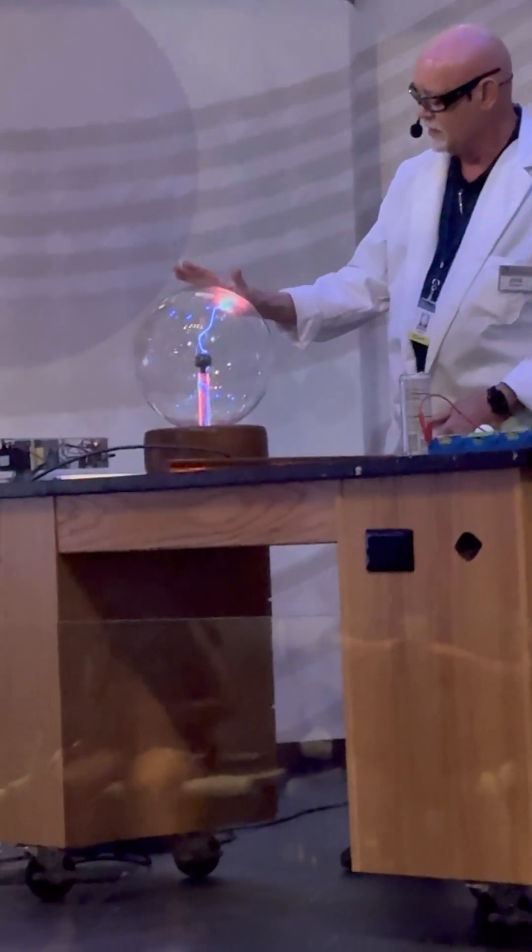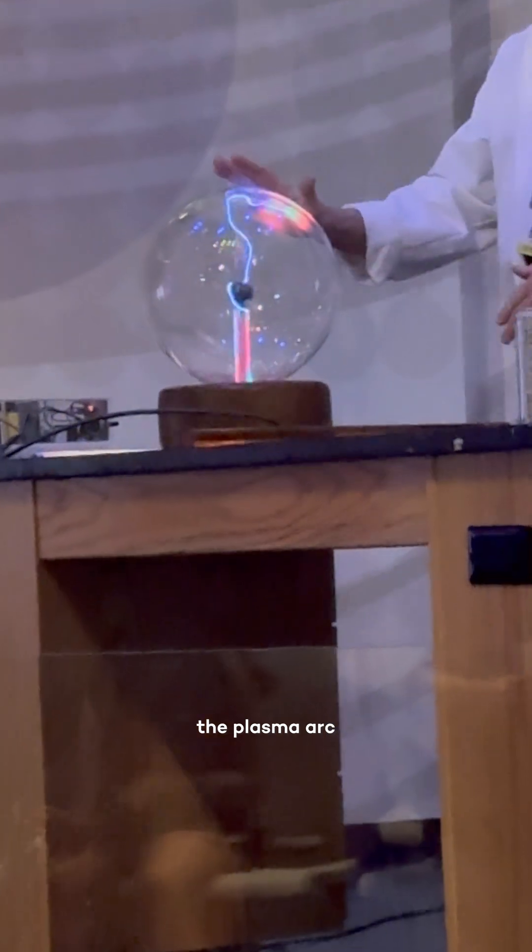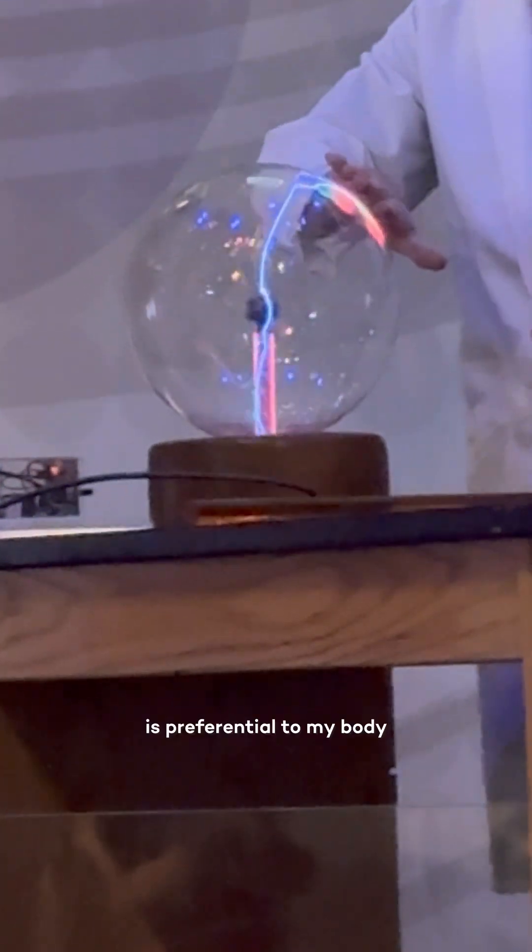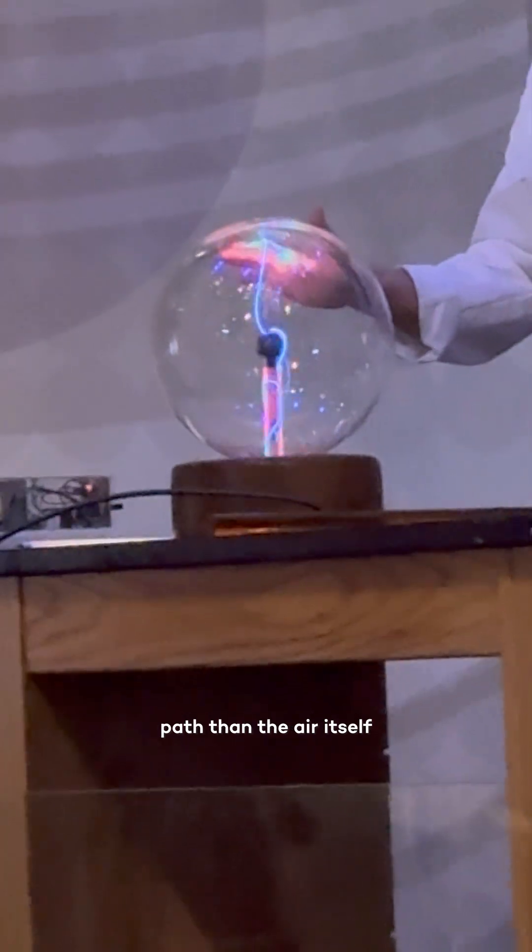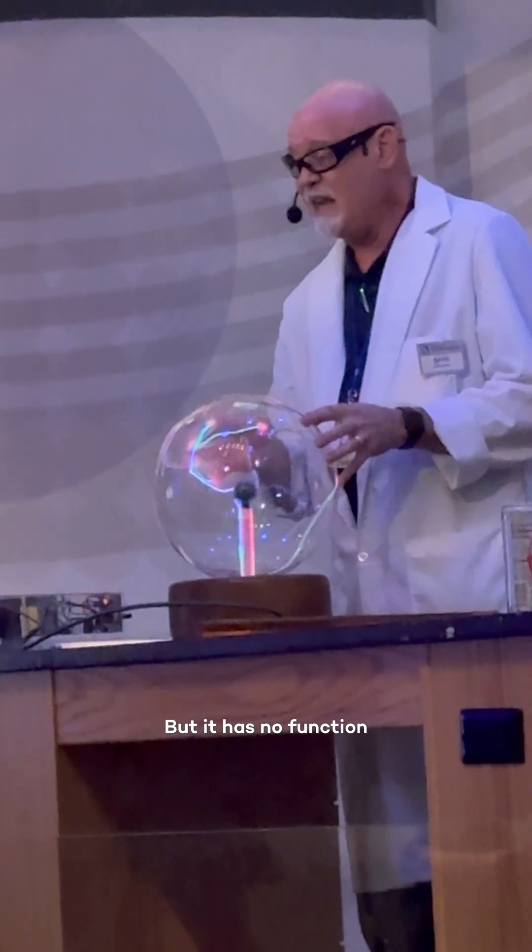So when I offer my hand, the plasma arc is preferential to my body because I'm a better conducting path than the air itself. But it has no function.